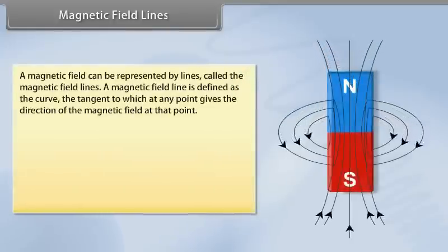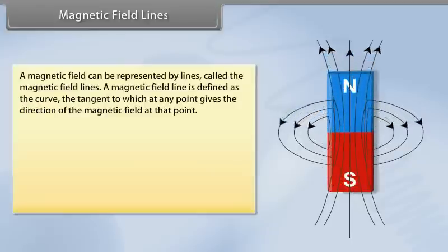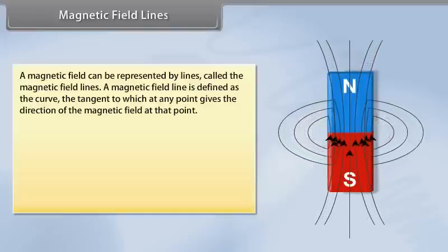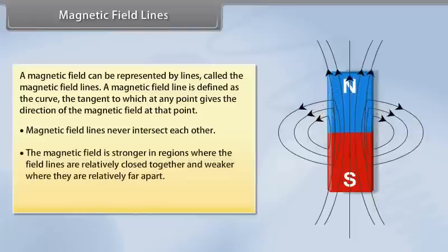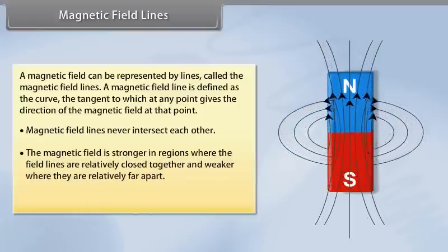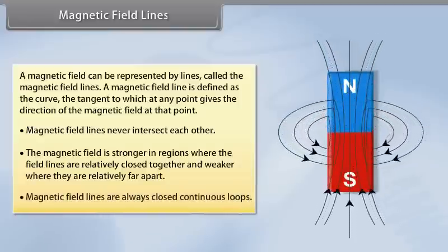Magnetic Field Lines: A magnetic field can be represented by lines called magnetic field lines. A magnetic field line is defined as the curve, the tangent to which at any point gives the direction of the magnetic field at that point. Magnetic field lines never intersect each other. The magnetic field is stronger in regions where field lines are relatively close together, and weaker where they are far apart. Magnetic field lines are always closed continuous loops.